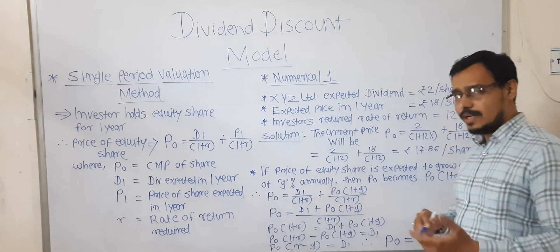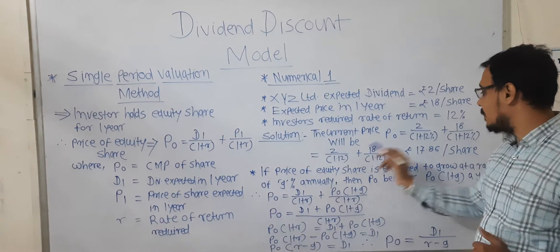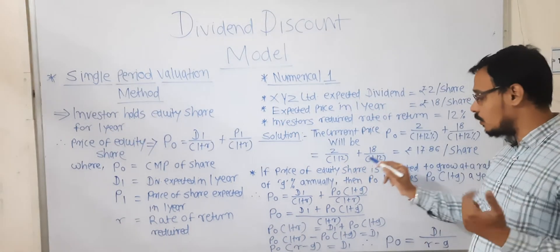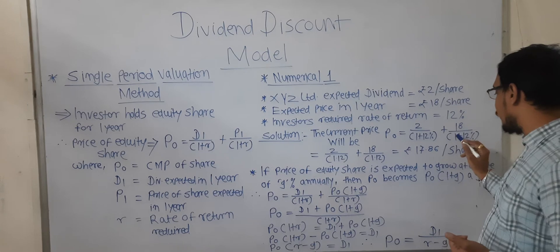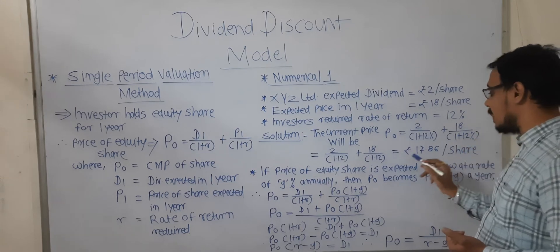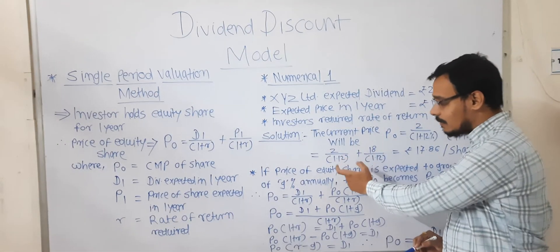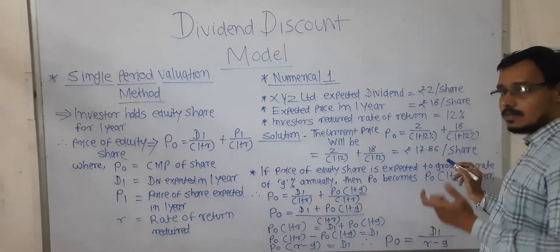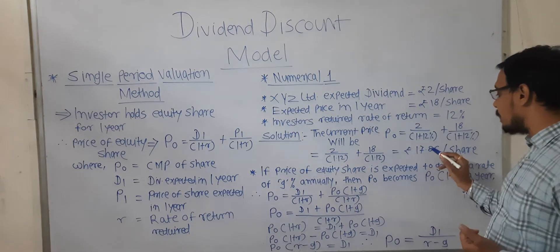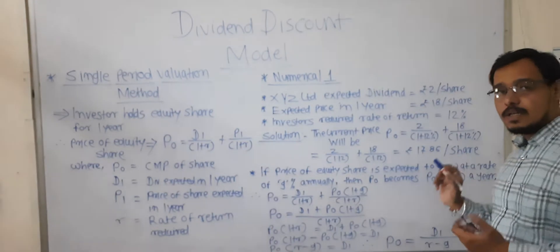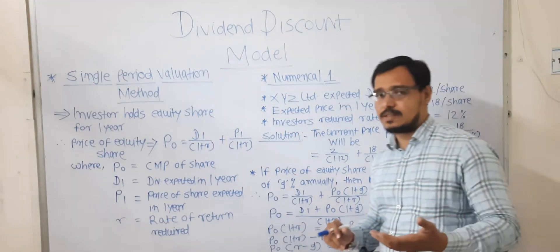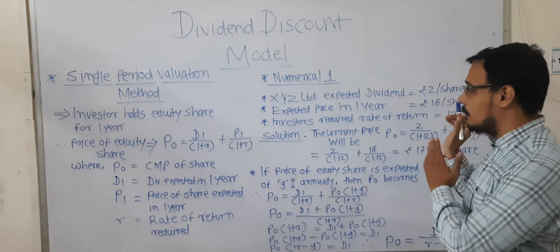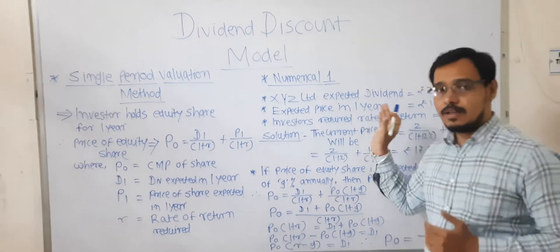Calculating: 2 divided by 1.12, plus 18 divided by 1.12. The sum gives us rupees 17.86 per share. This is the simple calculation — when we put the values into the formula, we get the current market price of XYZ Limited.